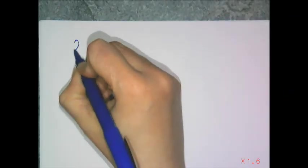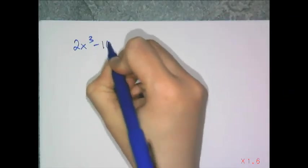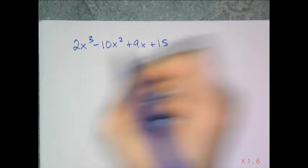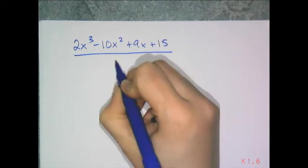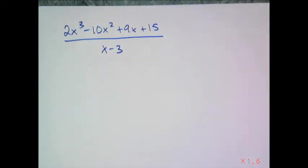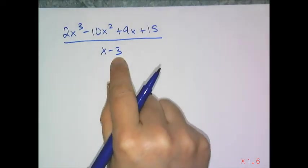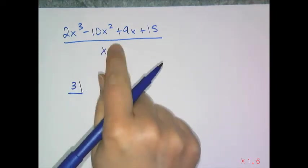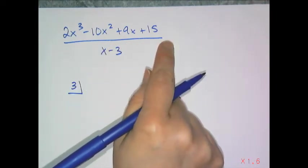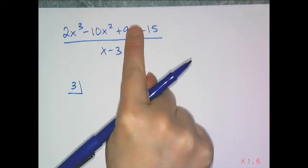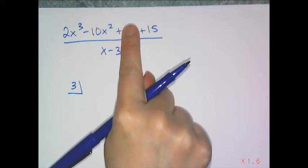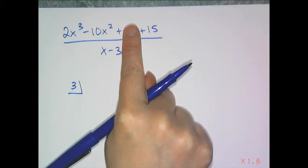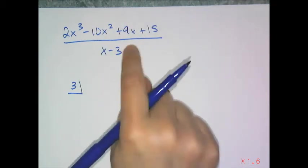Let's say I have 2x cubed minus 10x squared plus 9x plus 15 divided by x minus 3. So what I do is I take the 3 and I shove it in a little box in the corner. And I write down all of my coefficients. Now if I happen to be missing a term, like let's say that linear term wasn't there, I have to put a 0 as a placeholder.